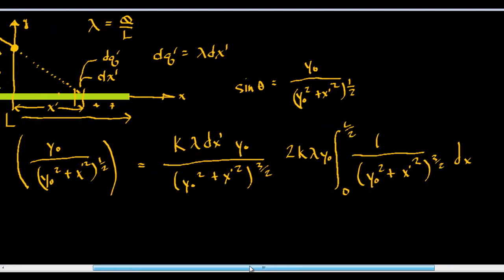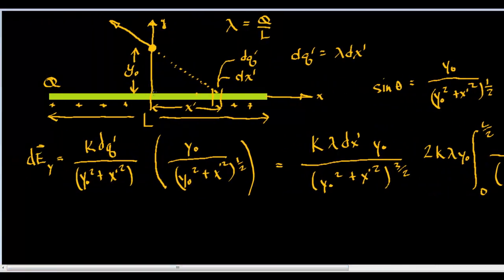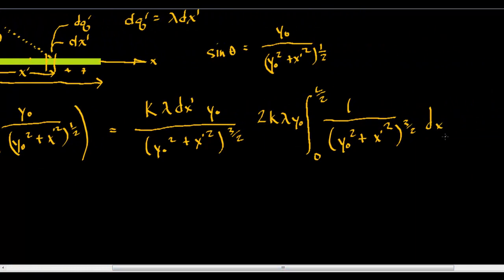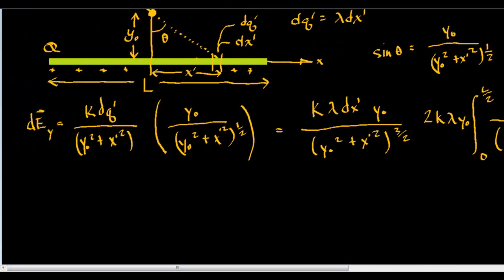There is another way to look at solving this problem: what if instead of integrating over the change in x, we integrate over the change in this angle? We can integrate when this angle is 0 — when x becomes 0 the angle becomes 0 — and then integrate up to theta max. To do that, we need to rewrite the entire equation in different terms: we need a way of rewriting dx in terms of d-theta, and also rewrite the denominator.